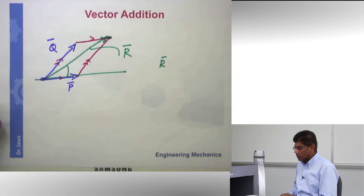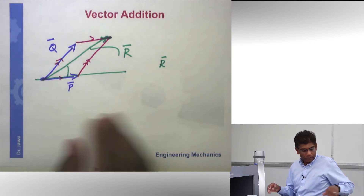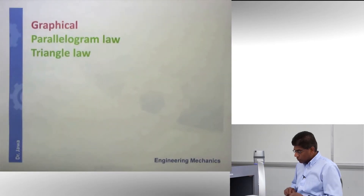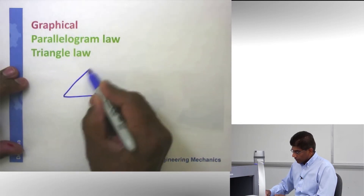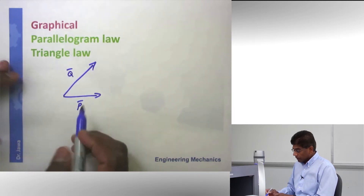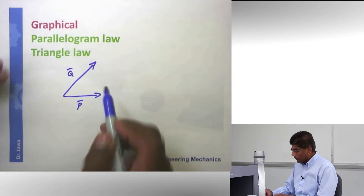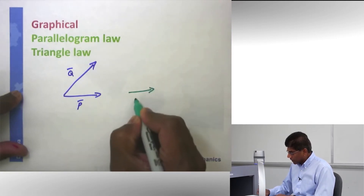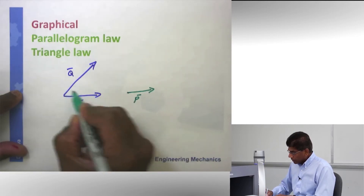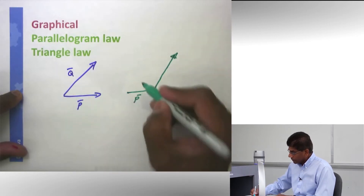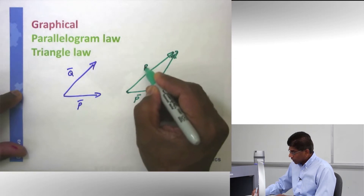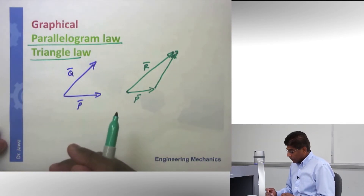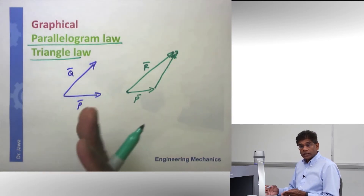There is also another approach which is effectively the parallelogram approach, but sometimes people use the term triangle law. Using triangle law, here is vector P — you transfer vector Q to the head of P, which is effectively drawing a parallel line, and the two endpoints give you the resultant. So parallelogram law and triangle law are effectively the same; people just use different terms. You can use whichever you are comfortable with.